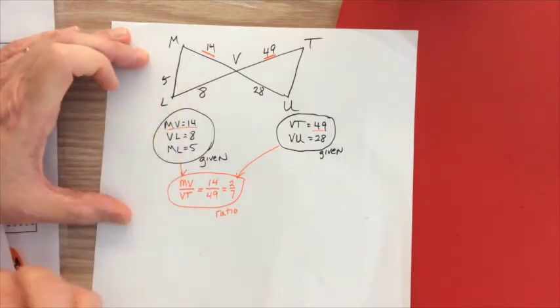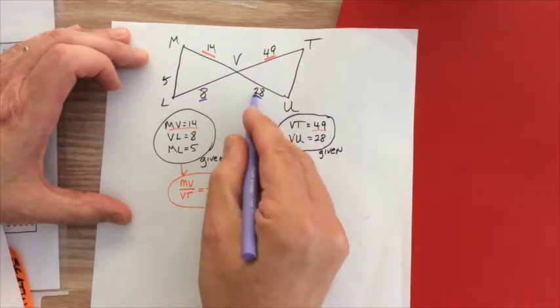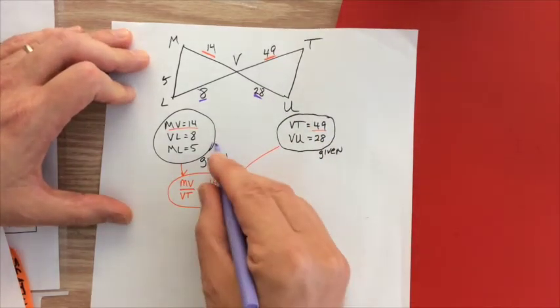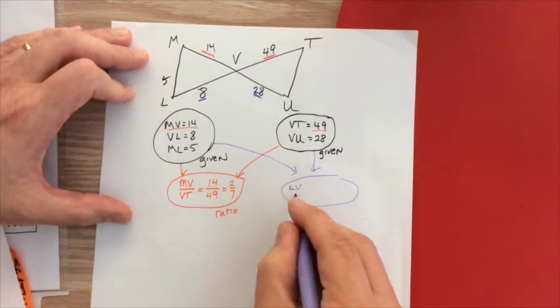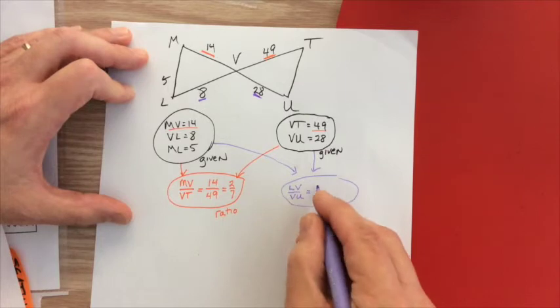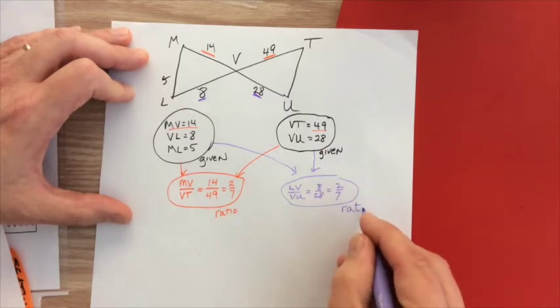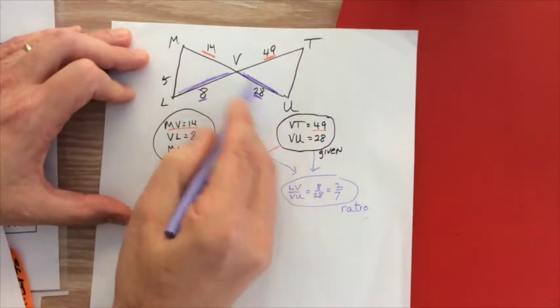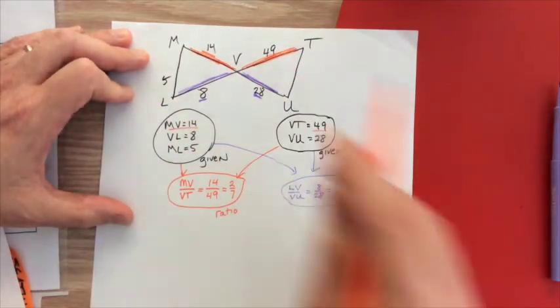The other corresponding sides we have are this one and this one, the smaller and the smaller. We have LV over VU, and that's equal to eight over 28. I can divide top and bottom by four. I'll get two over seven. They have the same proportion, right? Here and here has the same proportion as here and here.